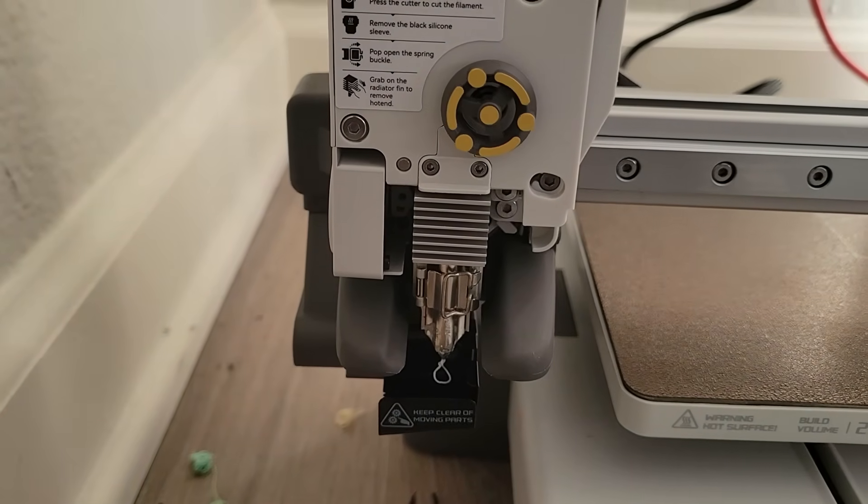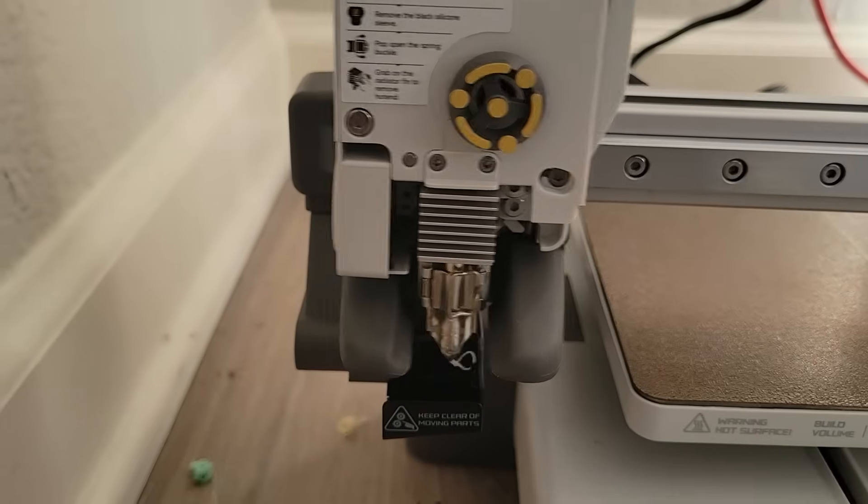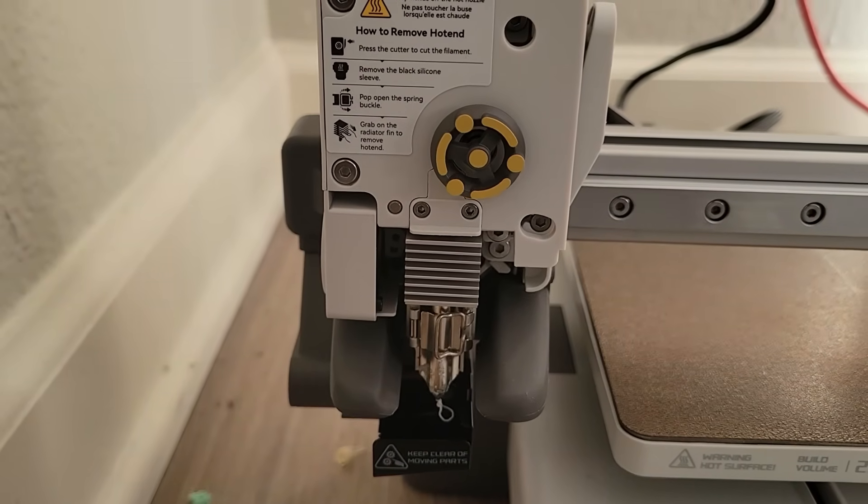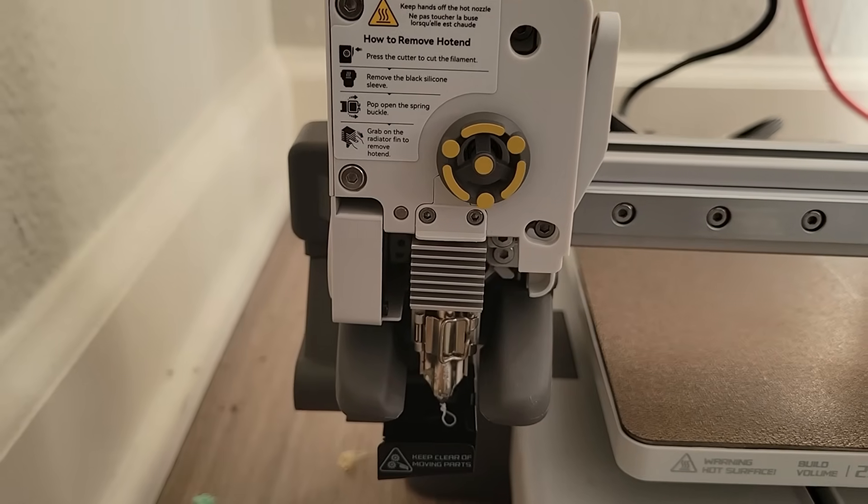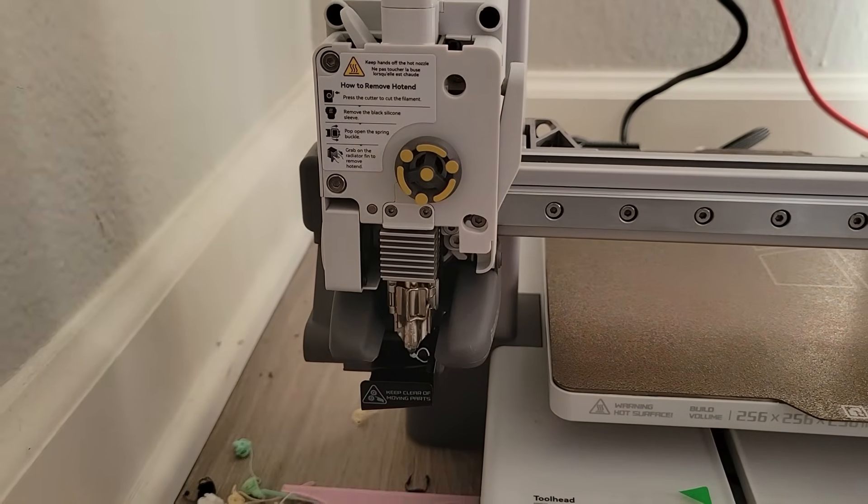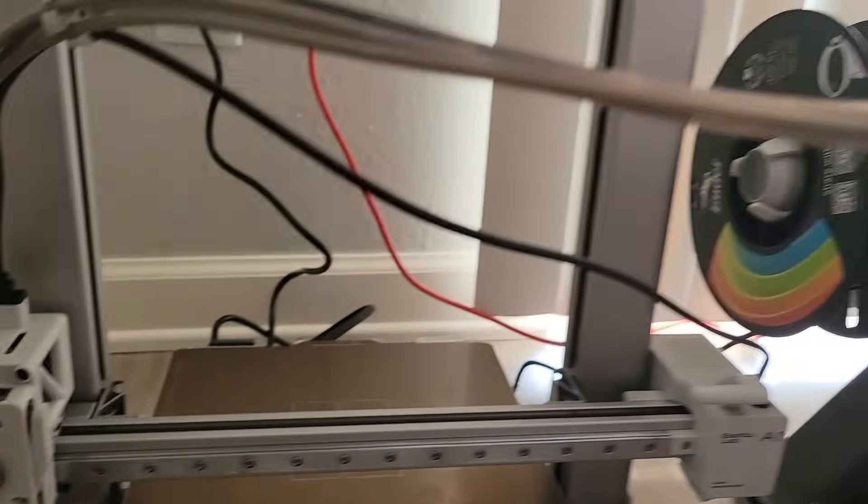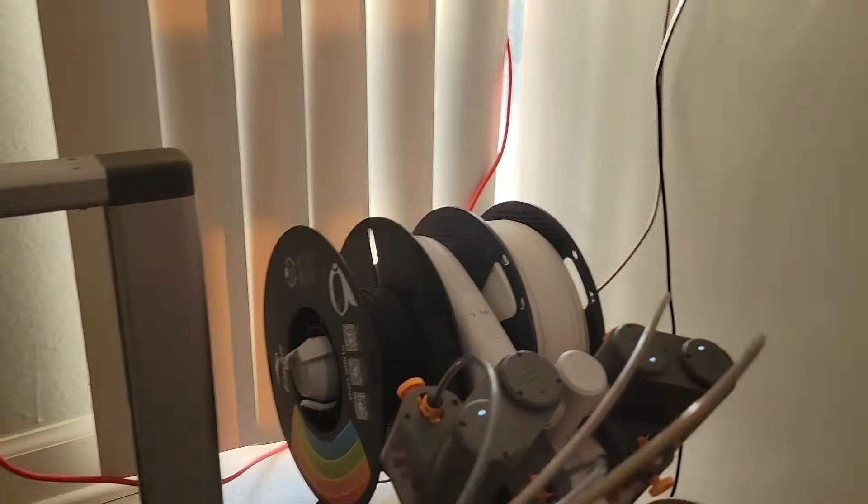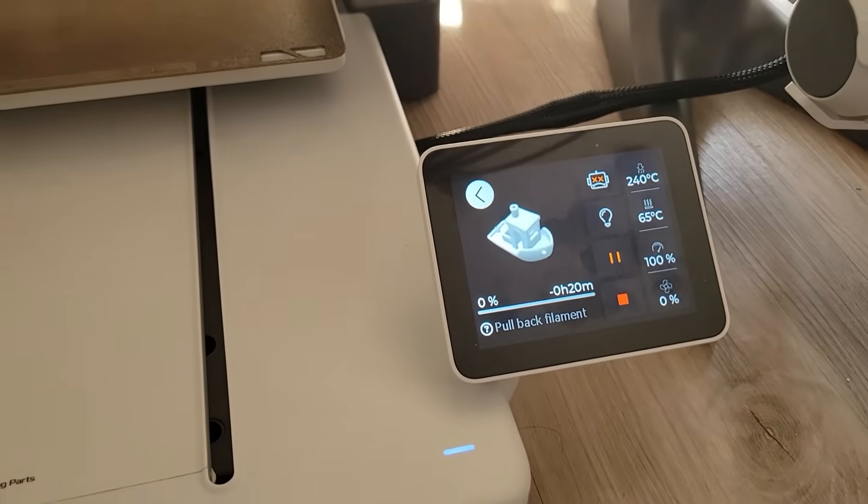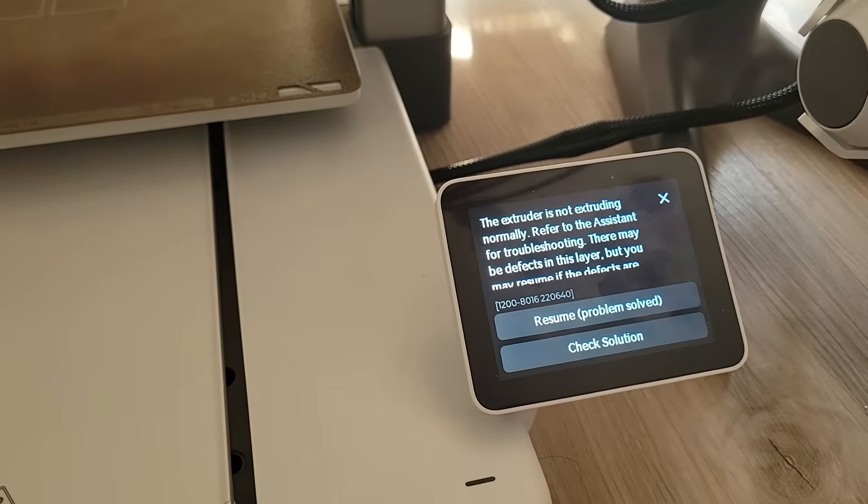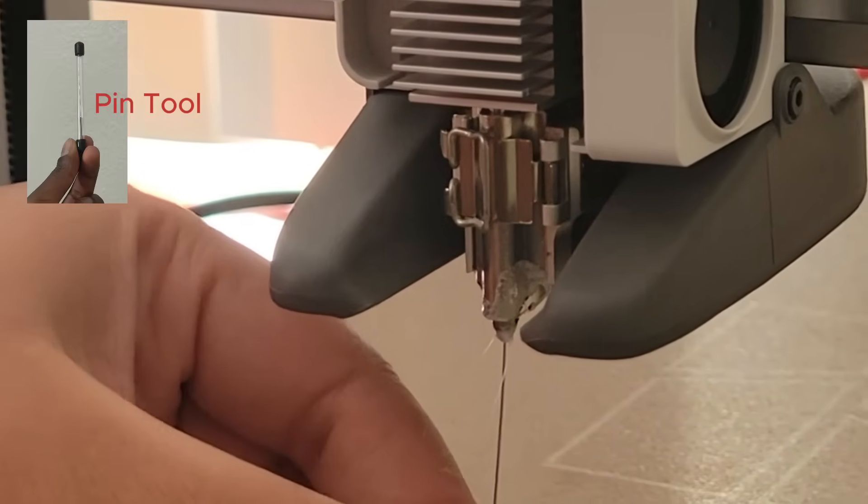In this video we'll check how to unclog the hotend if the filament is not extruding from the extruder. If you see, I try to extrude the filament and it keeps on rolling, but something must be clogged in the hotend. When this happens, the filament rolls back. This happens a few times and after that you'll get an error message on the screen. If this happens, there are two ways to handle this.